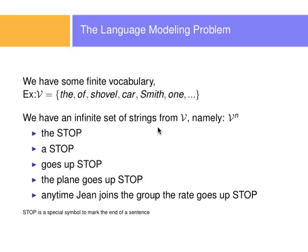We have an infinite set of strings that we can form from this vocabulary. If I use stop as a symbol for the end of a sentence, I can have strings like: 'the', 'a', 'goes up', 'the plane goes up', or 'anytime a gene joins the group the rate goes up.' The strings are infinite — there are infinite lengths and many, many possible combinations of words.